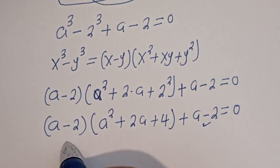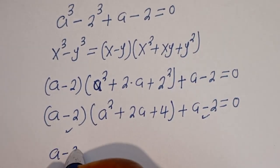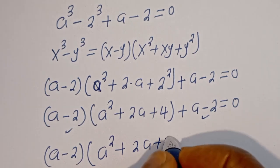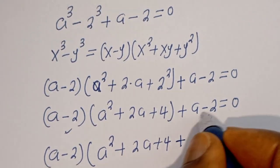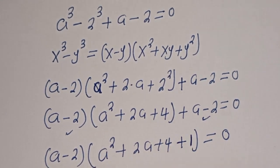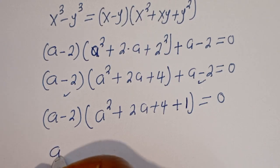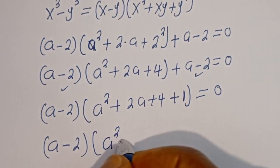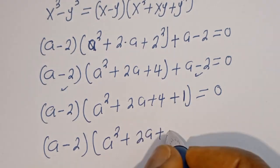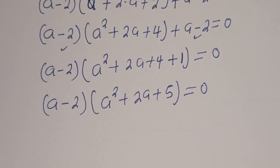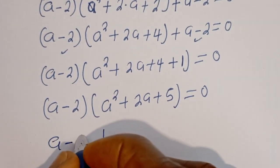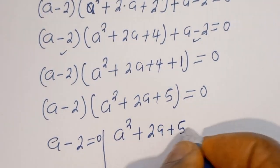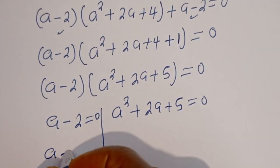Let's bring out (A minus 2) as a common factor. We have (A minus 2) bracket (A squared plus 2A plus 4 plus 1) is equal to 0, which gives (A minus 2)(A squared plus 2A plus 5) is equal to 0. There are two cases: the first case is A minus 2 equal to 0, and the second case is A squared plus 2A plus 5 is equal to 0.